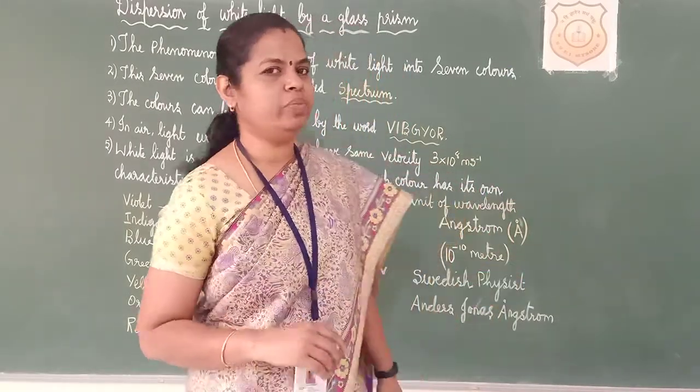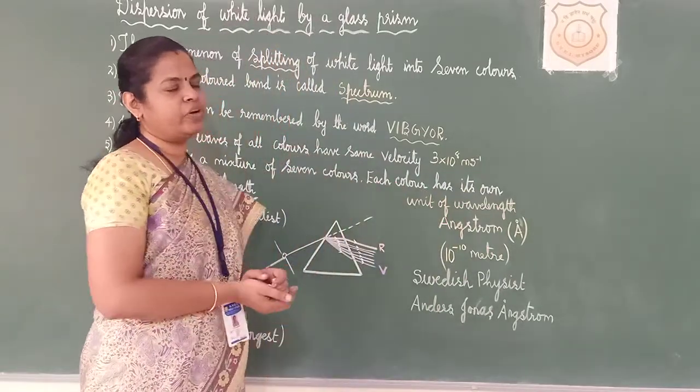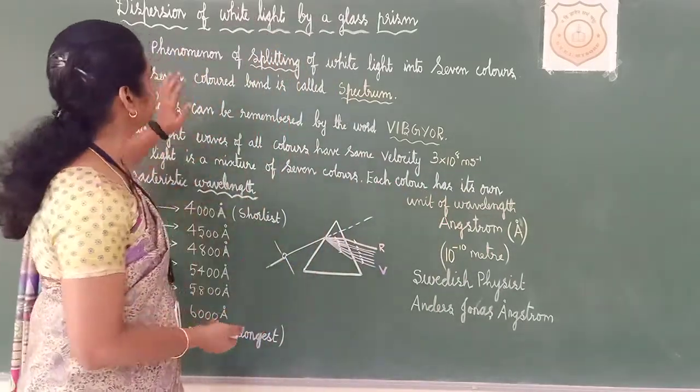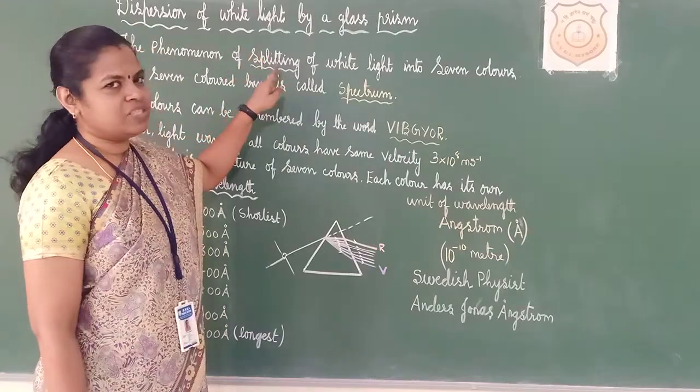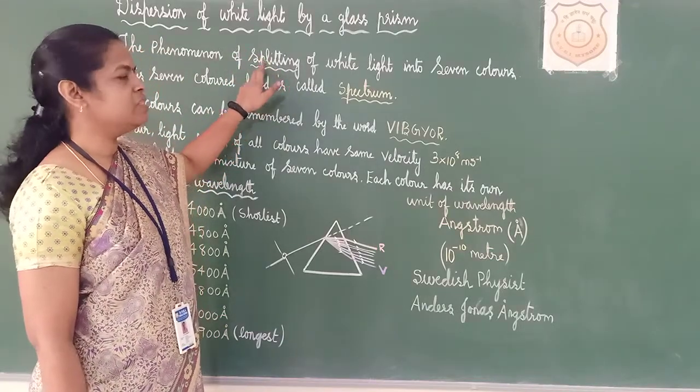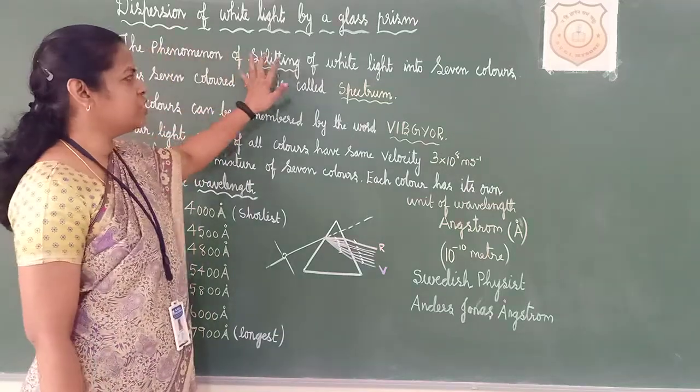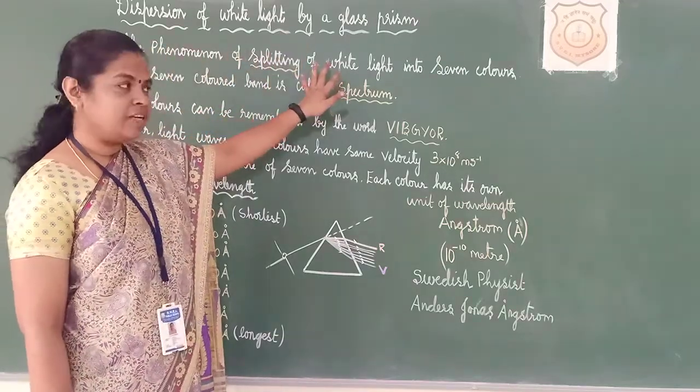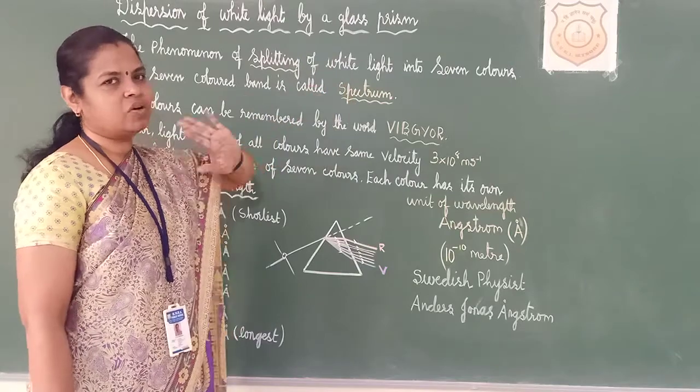All those seven colours we will be able to see. Five important points we will study about dispersion. The phenomenon of splitting. I told you, this word is very important. Keep this in mind. The phenomenon of splitting of white light into seven colours is called dispersion.